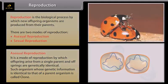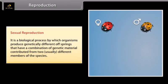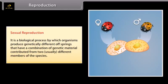Sexual reproduction is the biological process by which organisms produce genetically different offspring that have a combination of genetic material contributed from two usually different members of their species.